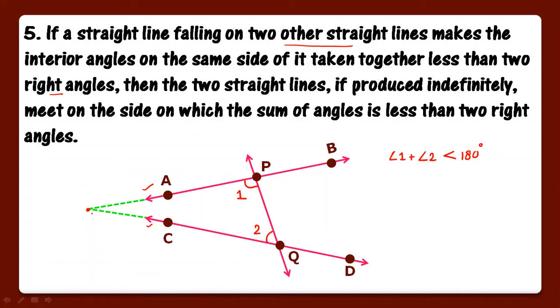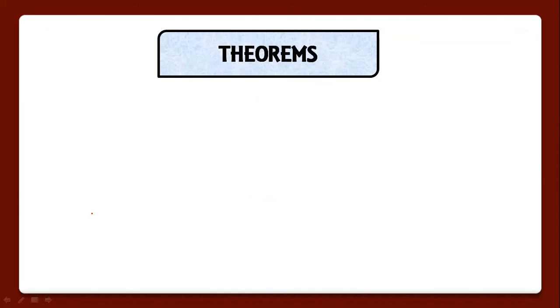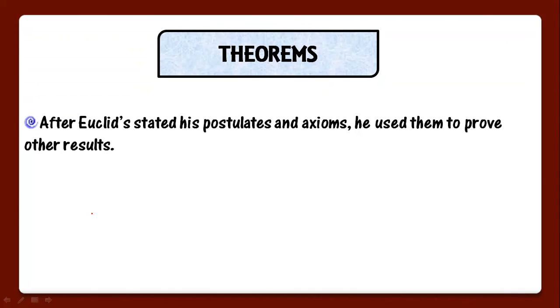Now these postulates are completed. One more important term which needs to be explained is theorems. After Euclid stated his postulates and axioms, he used them to prove other results. When Euclid stated the postulates and axioms, they were used to prove theorems. Their help was used in proving results.